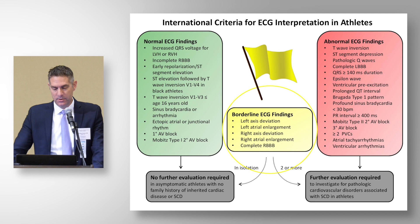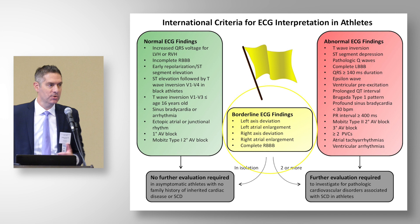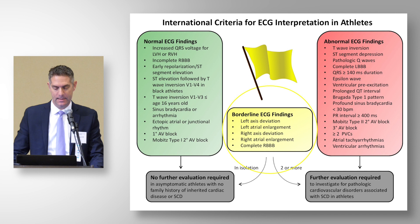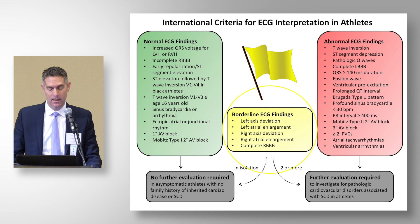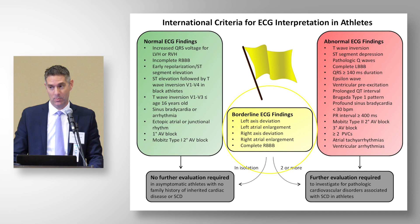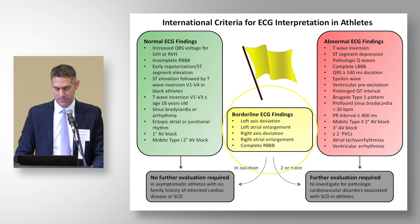Shifting to our yellow flag or borderline findings: axis deviation, atrial enlargement, and complete right bundle branch block. These are ECG findings where there is some uncertainty whether they represent pathology or normal variation in young athletes. In the Seattle criteria, complete RBBB was a normal finding; in the revised criteria it was listed as abnormal; now it's in the borderline group. Two or more of these borderline findings are uncommon and should trigger additional investigation.